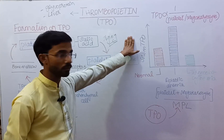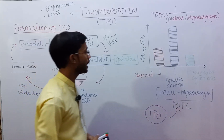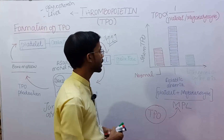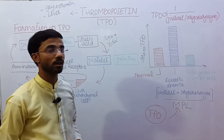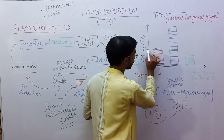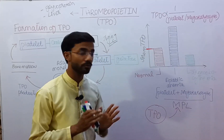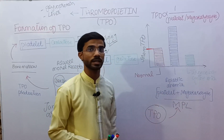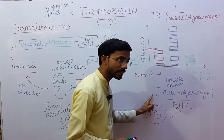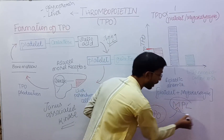Let's discuss the graph which will help explain the concept of TPO and platelets. The X-axis represents platelets/megakaryocytes and the Y-axis represents serum TPO concentration. In a normal situation, this graph shows normal concentrations of TPO. But in the case of aplastic anemia, where platelets and megakaryocyte count are low, the TPO increases. This is because when the platelets and megakaryocytes concentration is low, the MPL receptors present on them will also be low.